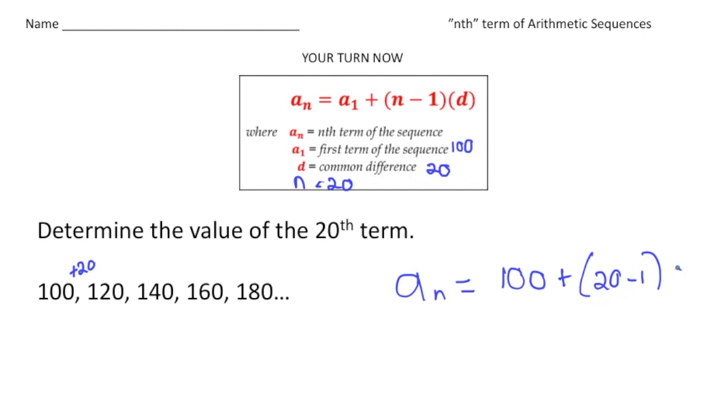We want to know the 20th term, so it's going to be 20 minus 1 times our common difference, which is 20. So if I do 20 minus 1, that's 19, and then 19 times 20 plus 100 will give us a number of 480. So 480 would be the 20th term in the sequence. How'd you do?